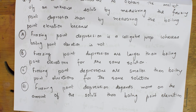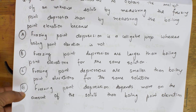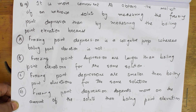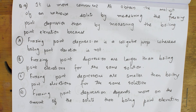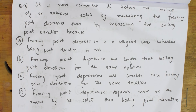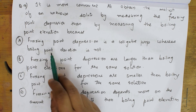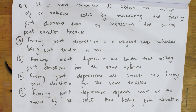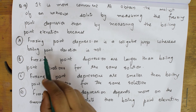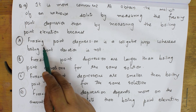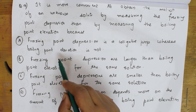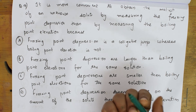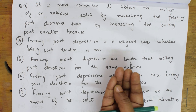This is a slightly longer question — let's understand the concept. They ask: it is more convenient to obtain the molecular weight of an unknown solute by measuring the freezing point depression rather than the boiling point elevation, because — and then give four options. Let's analyze why we prefer freezing point or boiling point elevation.